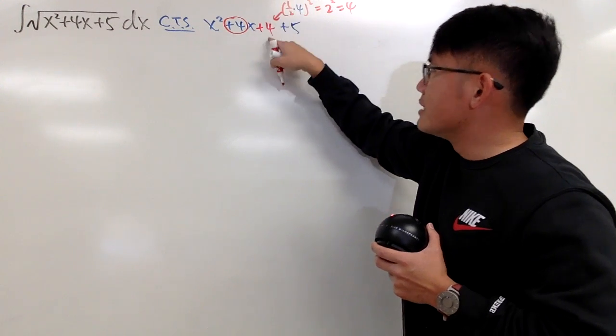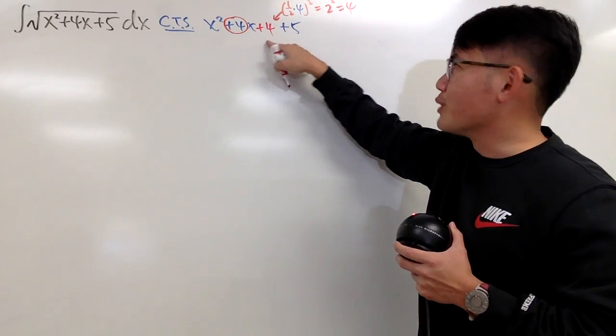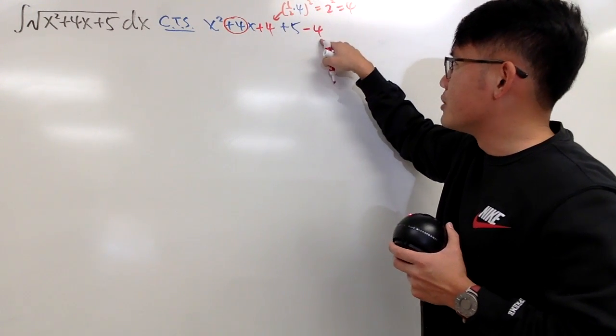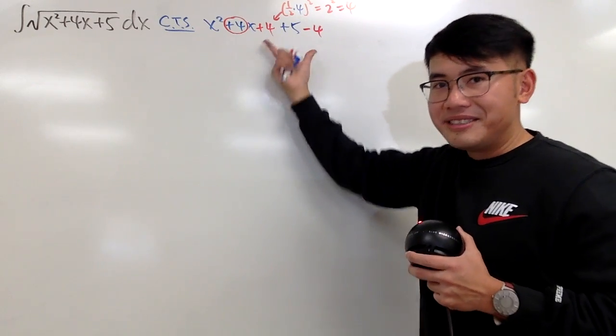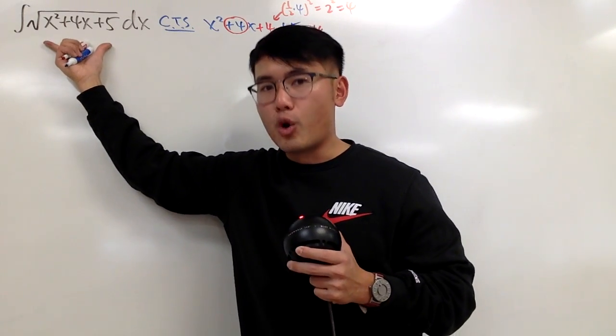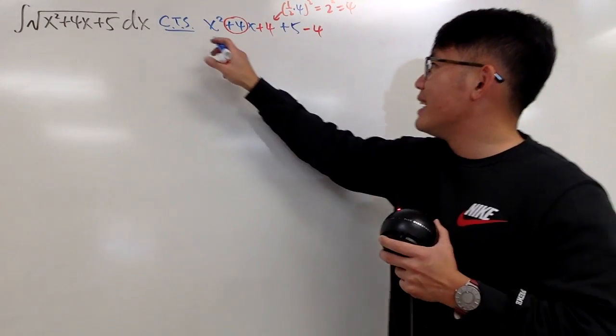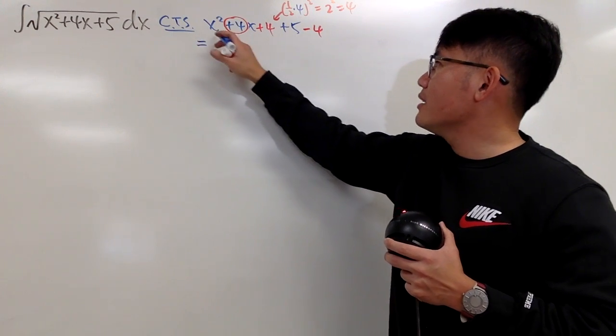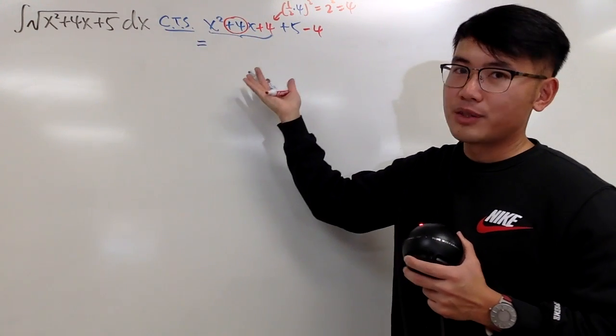So here, you are going to add this magic number, but you also have to make sure you subtract the magic number here, so that this is still the same as the original. And the beauty is that, right here, the first three terms gives you a perfect square now.